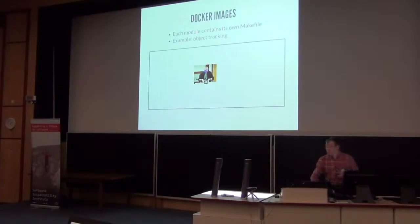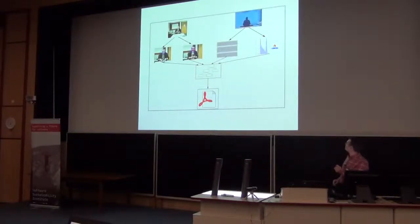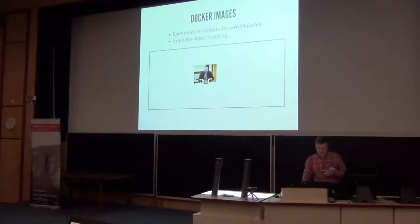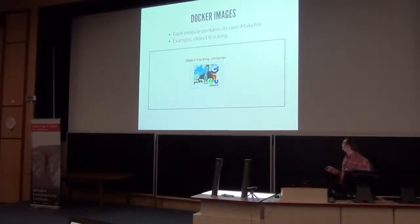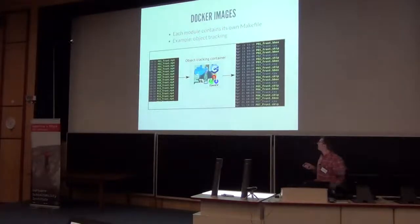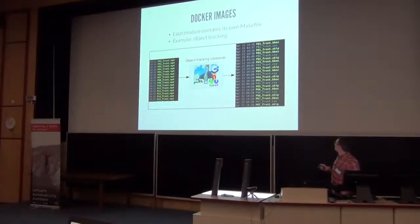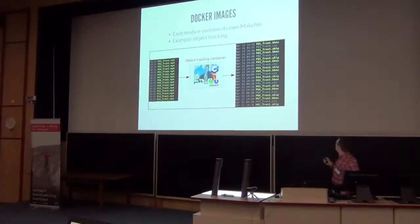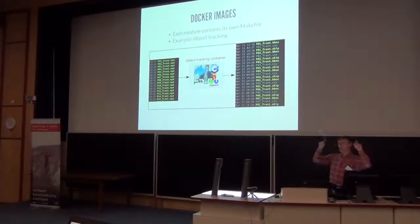Each of these boxes is basically a Docker image. The top-left one is the object tracking module — it's calling code called CPPMT, which is C++ over OpenCV. That Docker image has a make file; it ingests MP4 files, outputs a CSV file containing the tracking data, and gets user input for where to start tracking — basically drawing the box around the face on that frame.